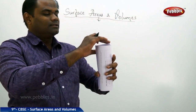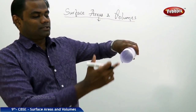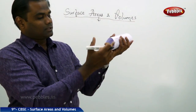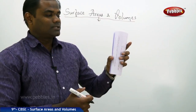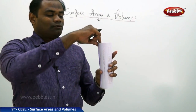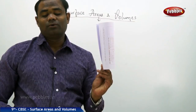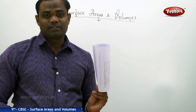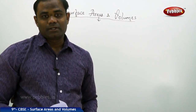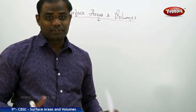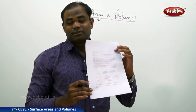We assume that this paper which is rolled forms a cylinder, and at the top and bottom it's open. So a cylinder formed through a rectangular sheet of paper is how we're going to understand. This session is about understanding the construction of a cylinder from a rectangular sheet of paper.